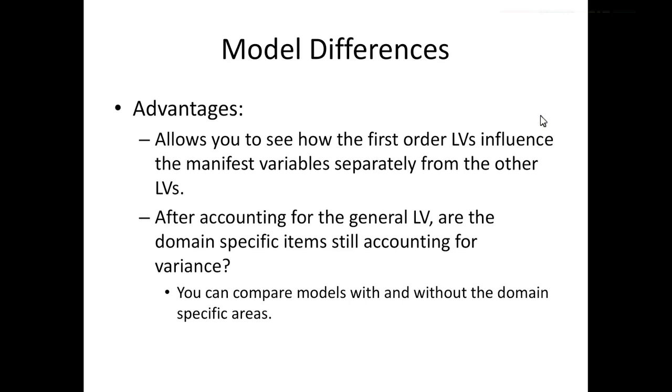But this allows really for model comparisons of what fits better, including these multiple extra specific domains or not. And so it really, to me, allows you to test if they even exist or are they even there after accounting for sort of a generalized idea. It also helps explain a lot of the covariance between items because they're all related to one other thing. And then separately, here's how they fit after accounting for the generalized one. So that's the basic gist of hierarchical and by-factor models.